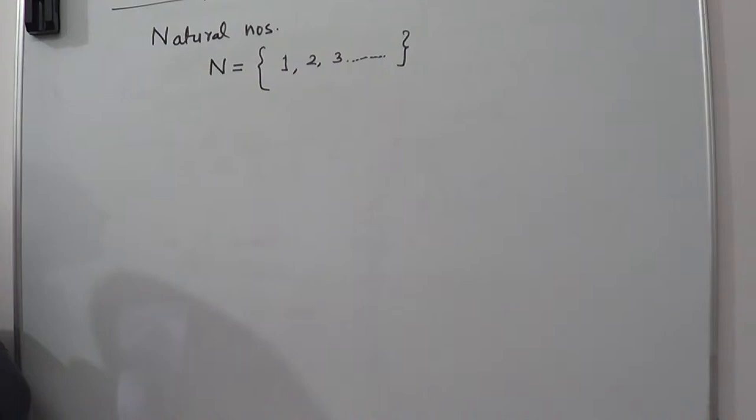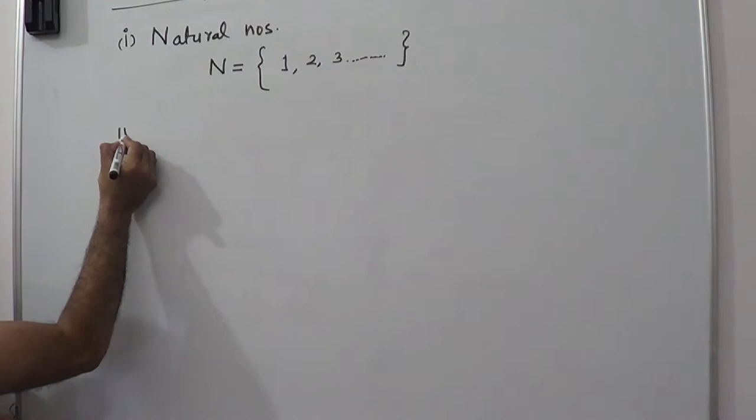Why are these numbers known as natural numbers? It is due to a simple fact. All physical or natural quantities can be measured or counted with the help of these numbers. This is the first category.